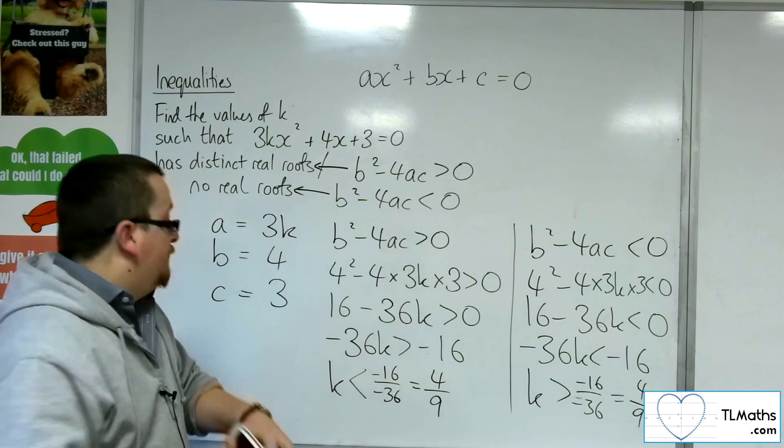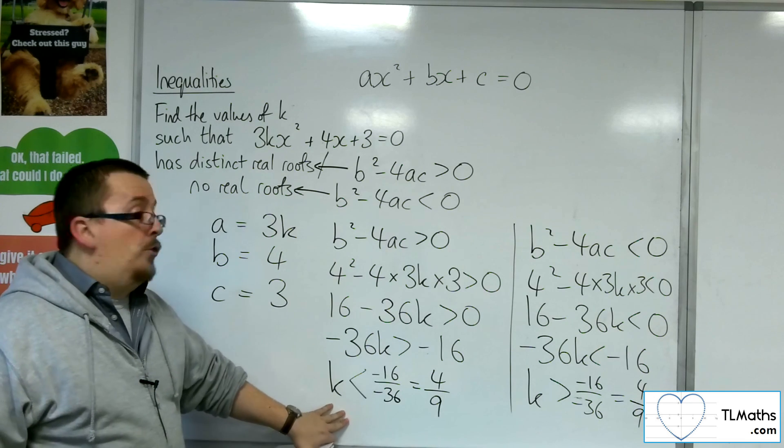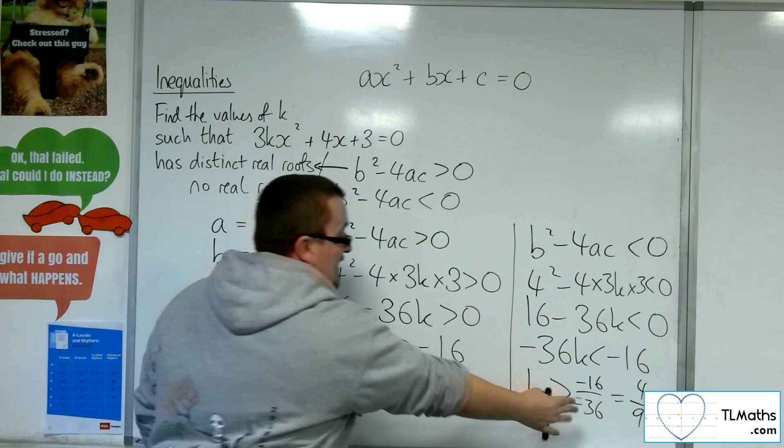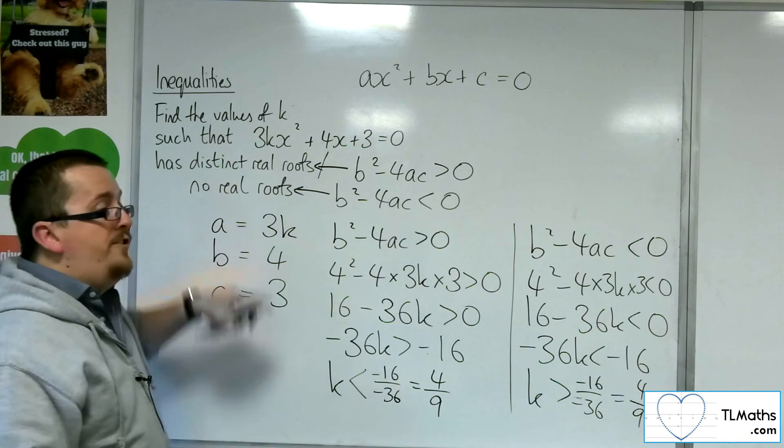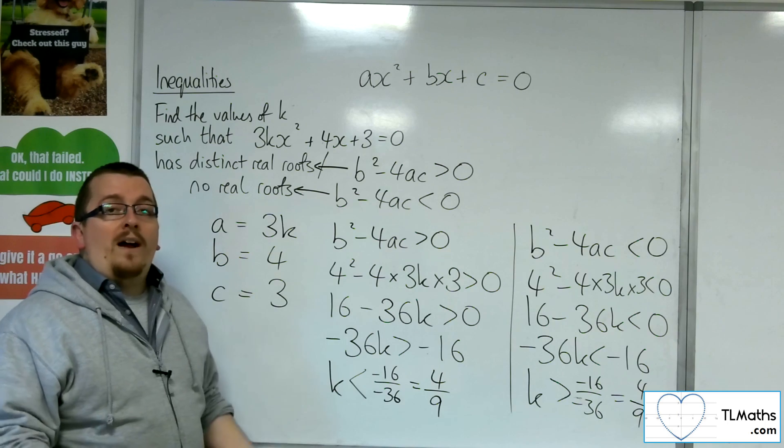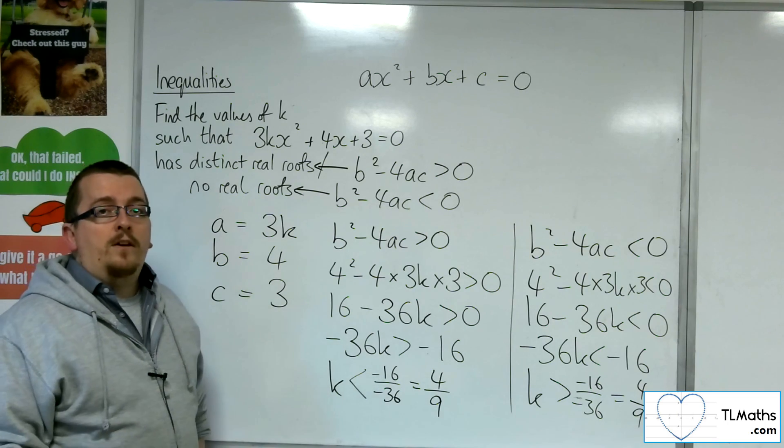So in other words, if k is less than 4 ninths, that quadratic has two distinct real roots. If it's greater than 4 ninths, then it has no real roots. If it's equal to 4 ninths, then it will have one repeated real root.